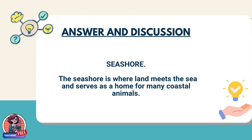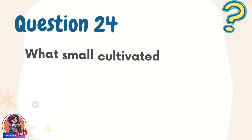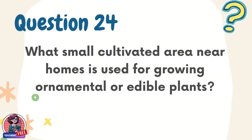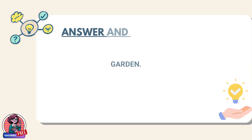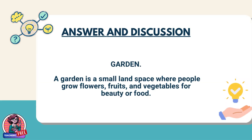Question 24. What small cultivated area near homes is used for growing ornamental or edible plants? Answer: Garden. A garden is a small land space where people grow flowers, fruits, and vegetables for beauty or food.